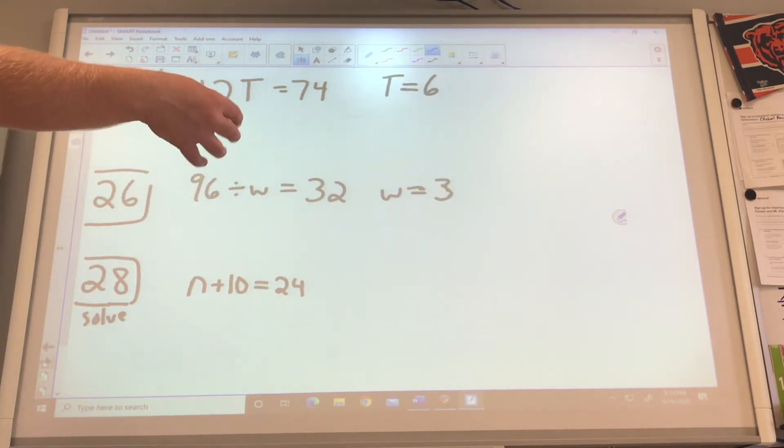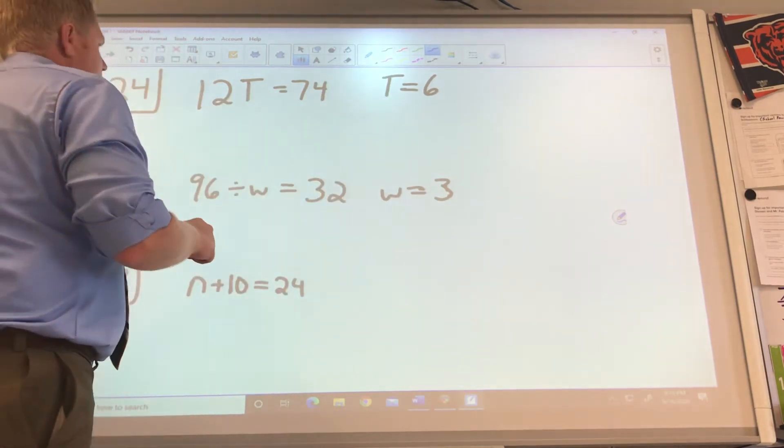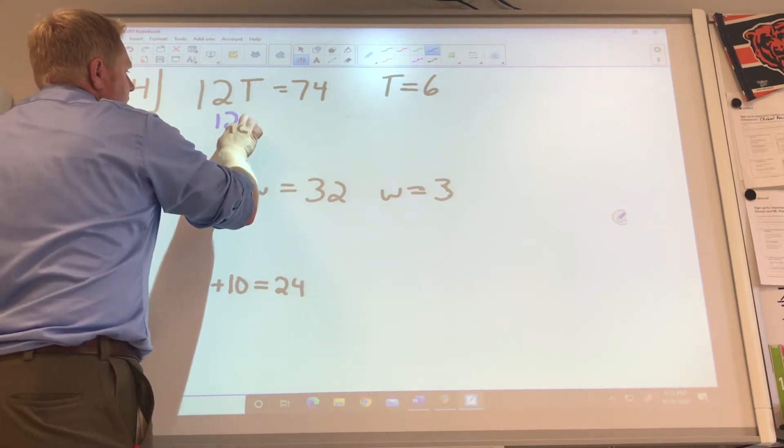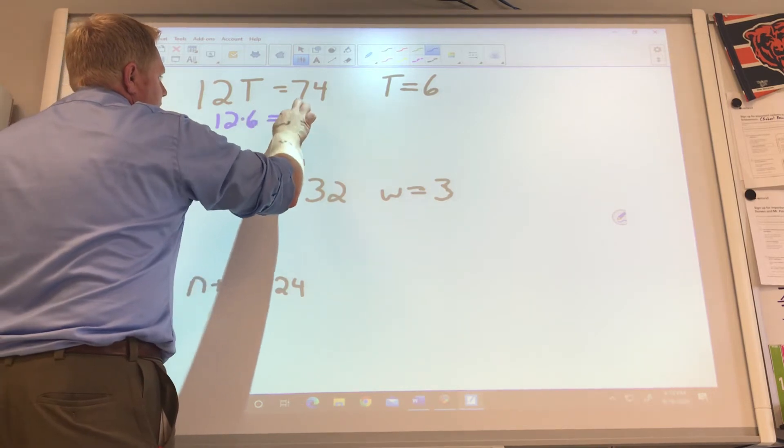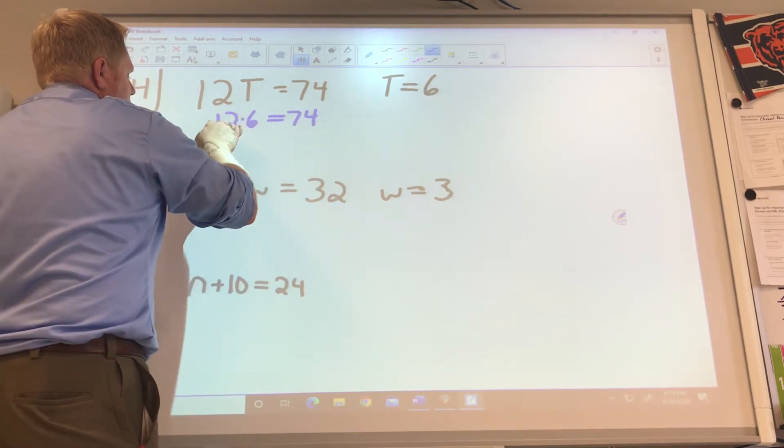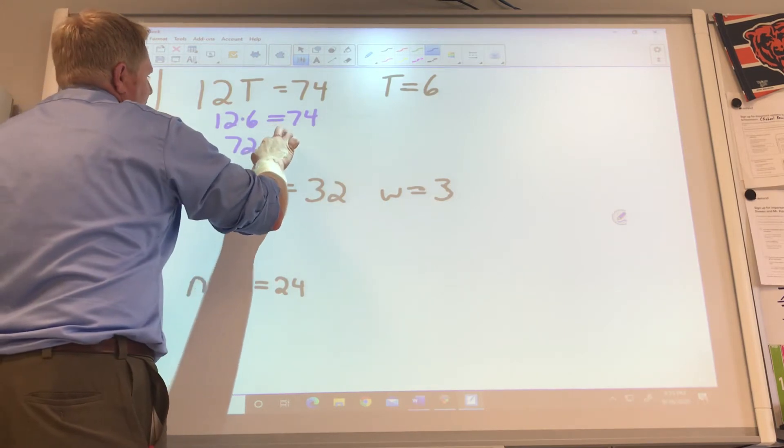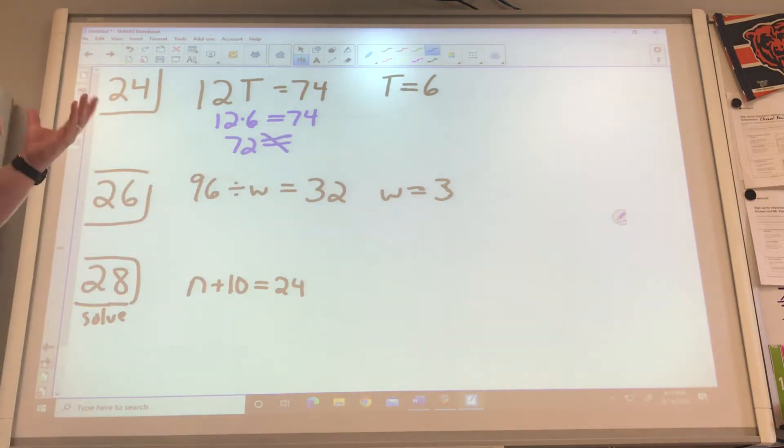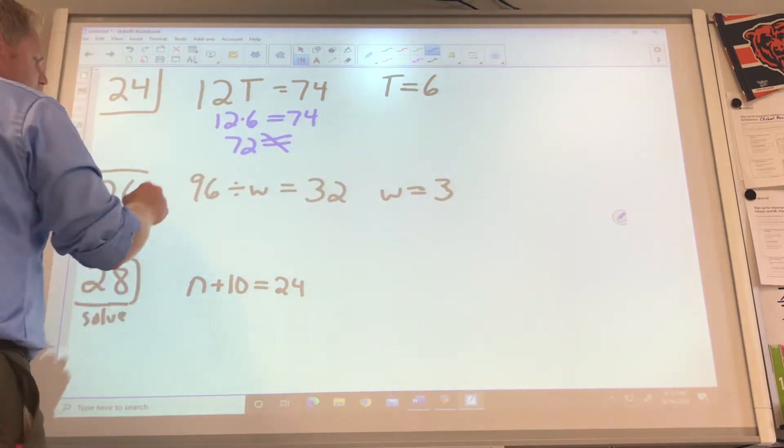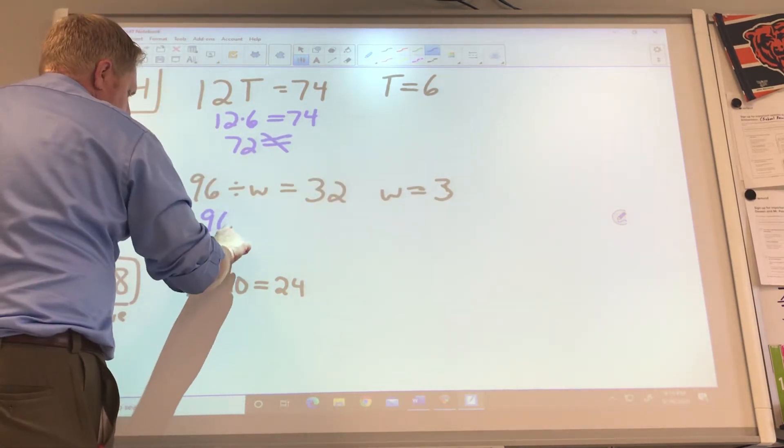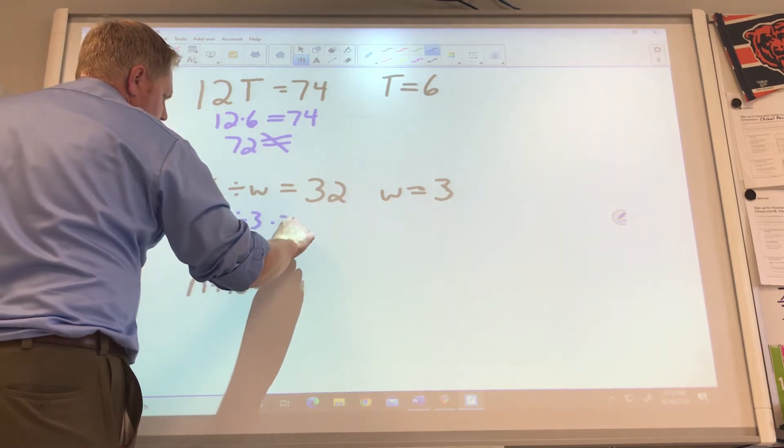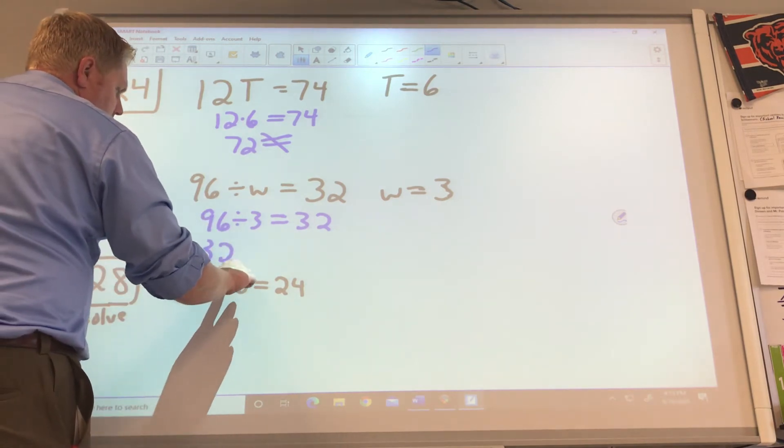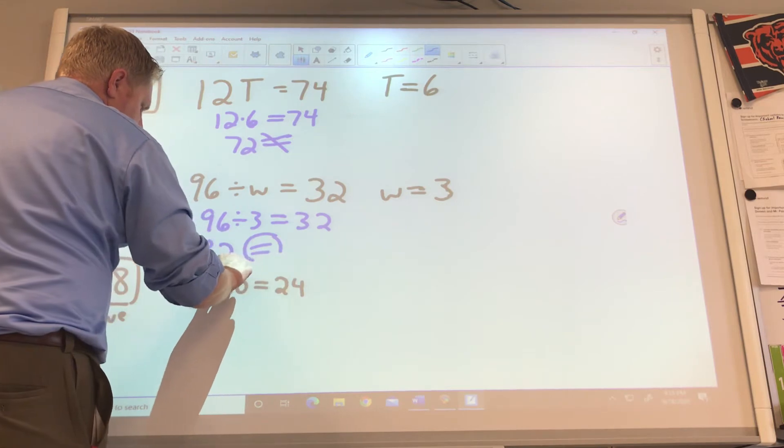24, this one says tell me if 6 is the solution to this. 12, a constant, T a variable next to each other. That means multiply. So 12 times 6 equals 74. Well, 12 times 6, that's 12 and 60. That's 72. Oh, that does not equal 74. Does not equal. So no solution. This one, does 3 solve this problem? So 96 divided by 3 equals 32. So that's 3, that's 2. They do equal. Yes, it is a solution. Good job.